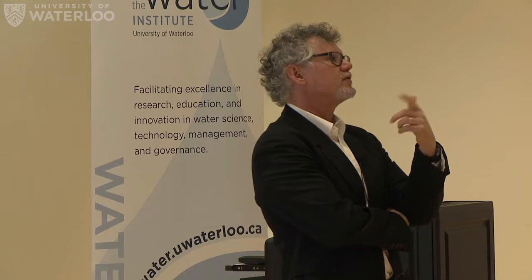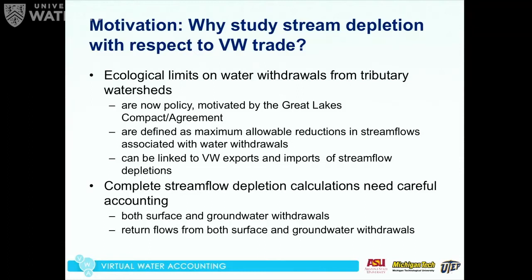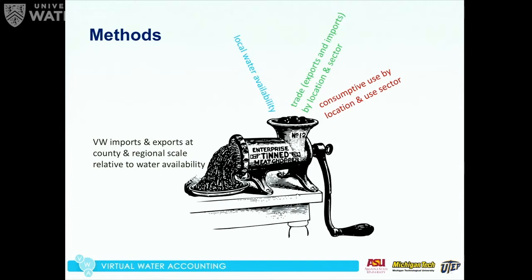When looking at stream depletions, it's not just about water withdrawn directly from streams — groundwater pumping can affect stream depletions too. We also need to consider return flows. I divide water use into consumptive use — water lost locally, say from evapotranspiration growing a crop — and return flows, the portion of withdrawn water returned locally. For example, municipal use might draw from groundwater and return 95% of that water back to the aquatic environment. There's an interesting twist on return flows that we looked at.